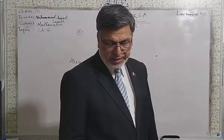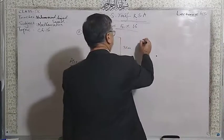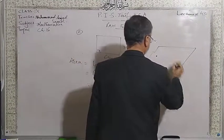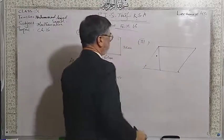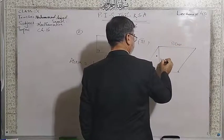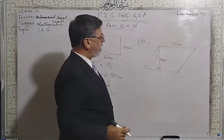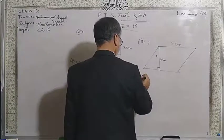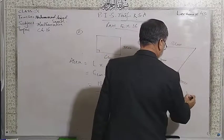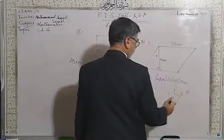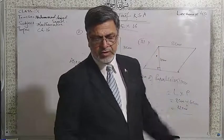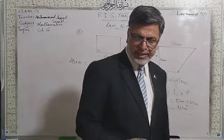In part number 3, we have a parallelogram with base 8 cm and height 4 cm. Area of a parallelogram is equal to base times perpendicular height, so 8 cm × 4 cm = 32 cm².